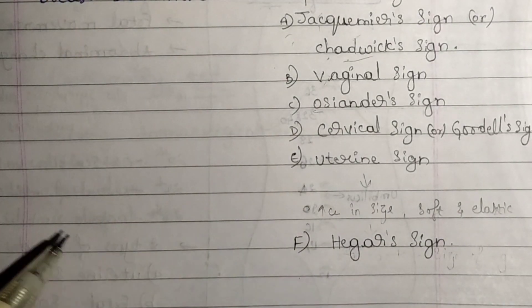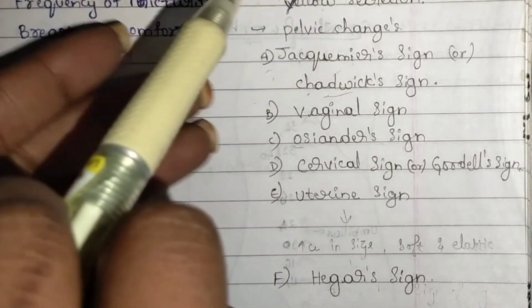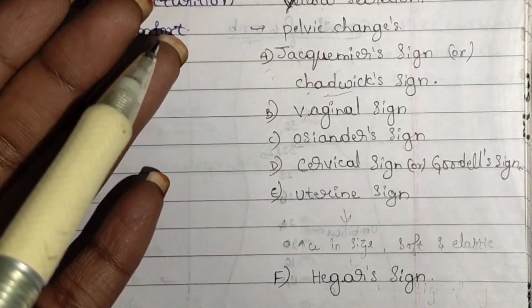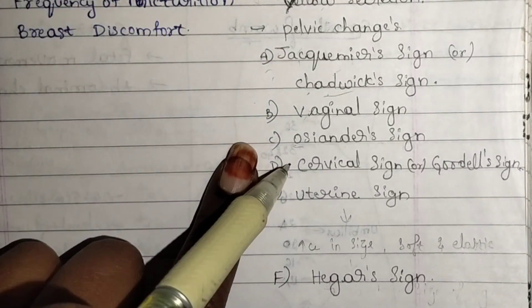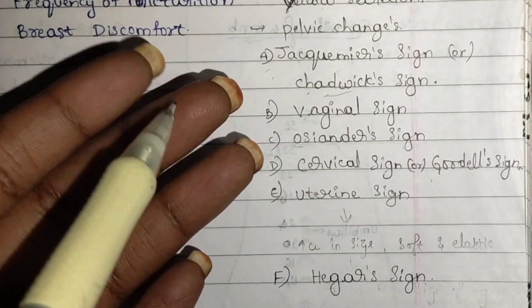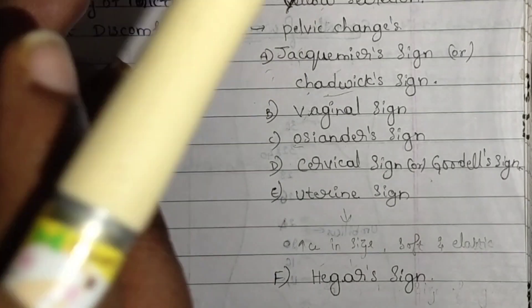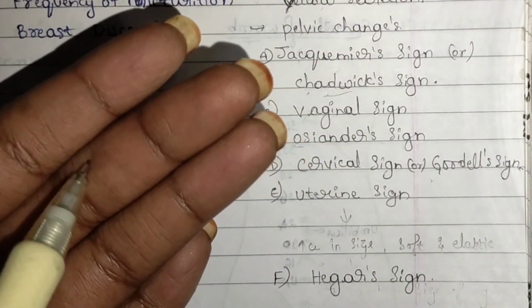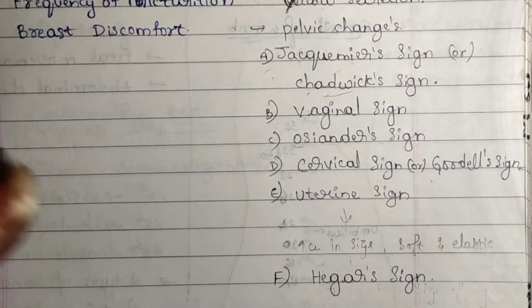To summarize the pelvic signs: Jacquemier/Chadwick sign — discoloration around the vagina; vaginal sign — softening of the vagina; Ossander sign — pulsation around the vagina; Goodell sign — softening of the cervix; uterine sign — increase in size, elasticity, and softening of the uterus; Hegar sign — softening of the region between the uterus and the cervix. These are the signs seen in the pelvis.